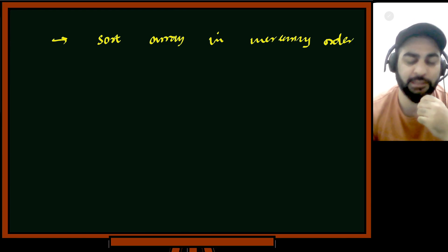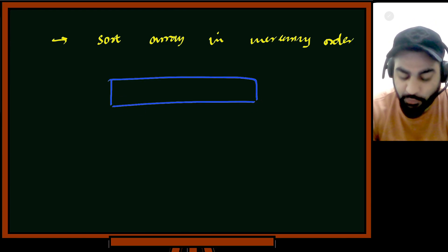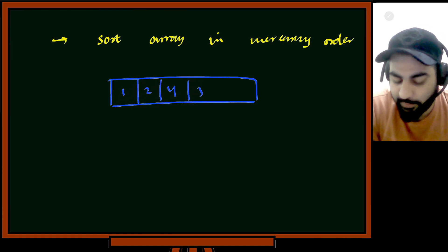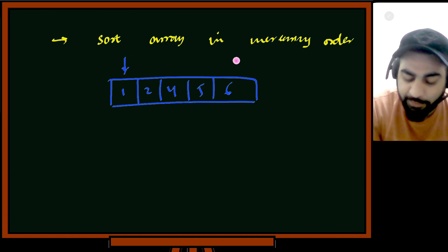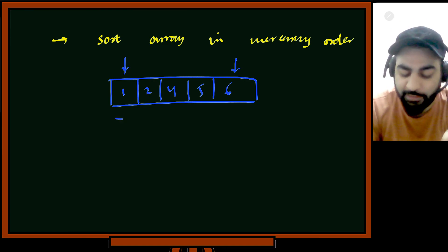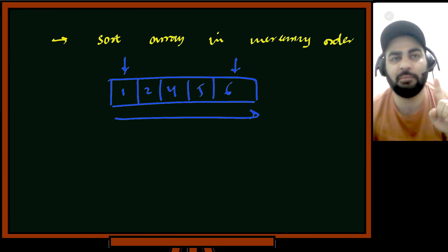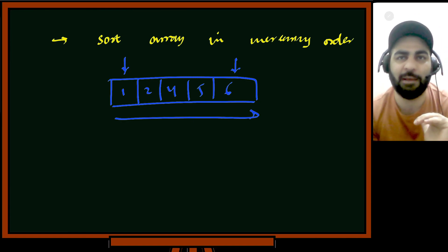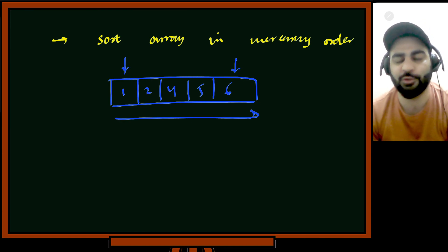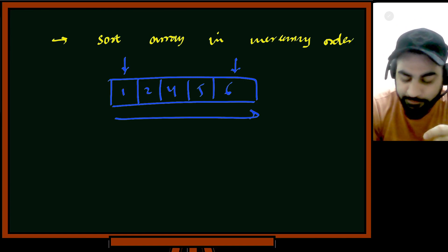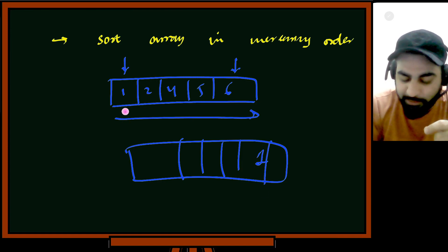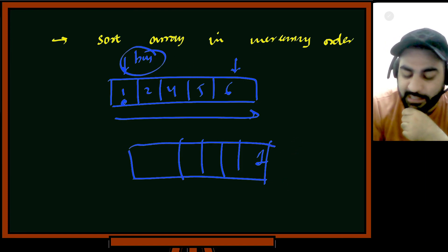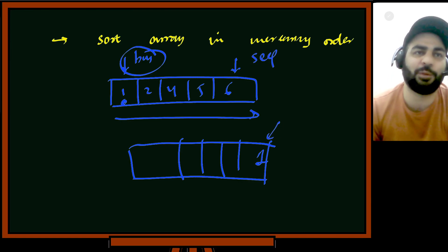Sorting will disturb the whole order. If you have 1, 2, 4, 5, 6, sorting would rearrange them and sometimes you'd say sell here and buy here — but that's not possible in real time. You have to respect the order: you should buy at a previous time and sell in the future. If this '1' was originally at the end of the array, and your algorithm says buy at 1 and sell at 6, you can't sell because that '1' was the last day of trading. So you cannot sell it now.